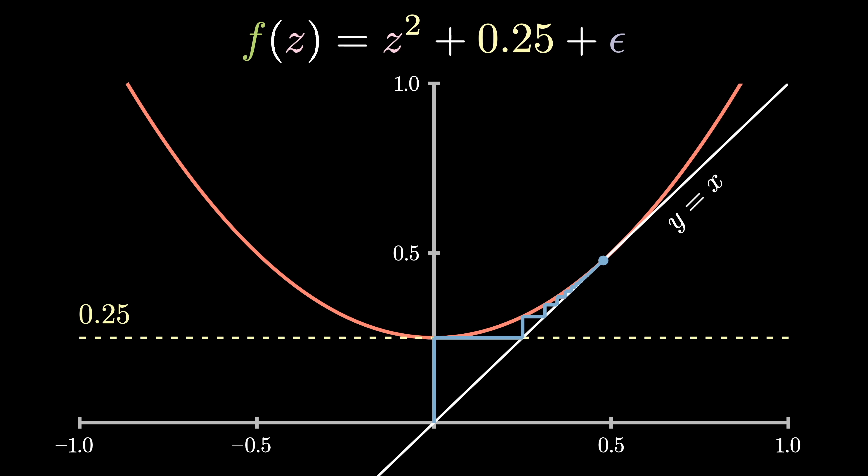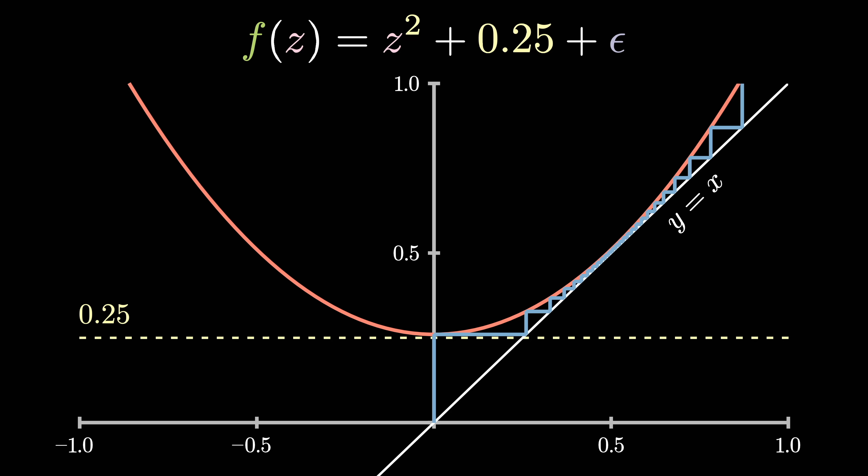But if I were to add some epsilon to this value, giving us the function f(z) equals z squared plus 0.25 plus epsilon, the effect is to shift this parabola a teeny bit up, such that y equals x is no longer tangent. Now, our Mandelbrot calculations no longer get stuck. They go on to infinity.